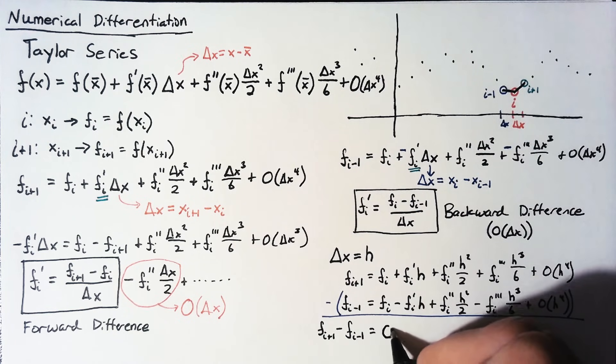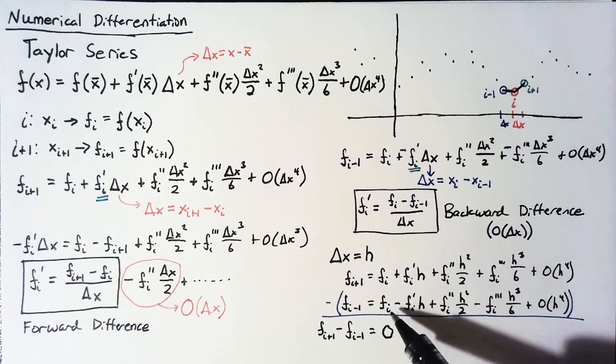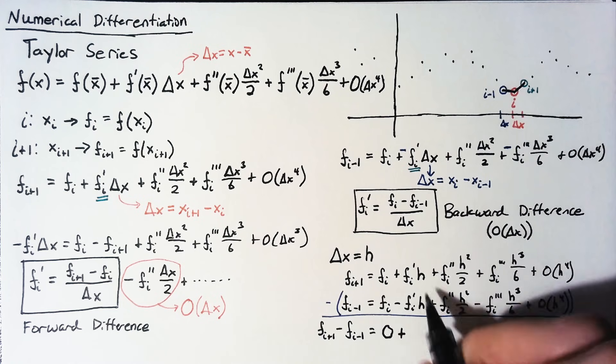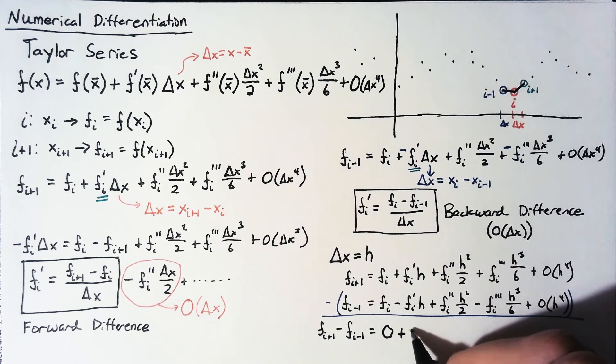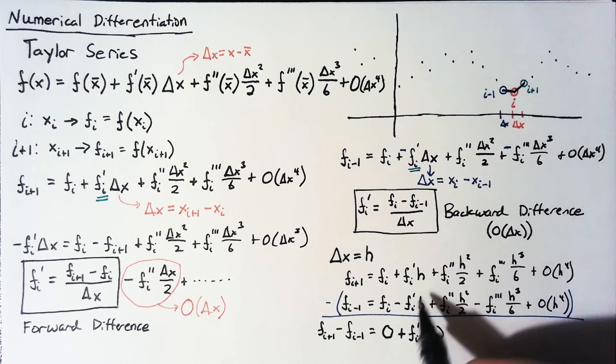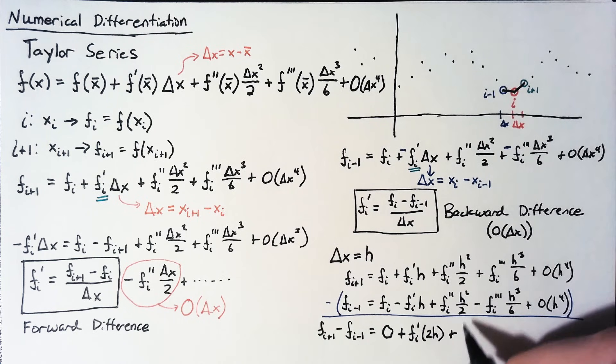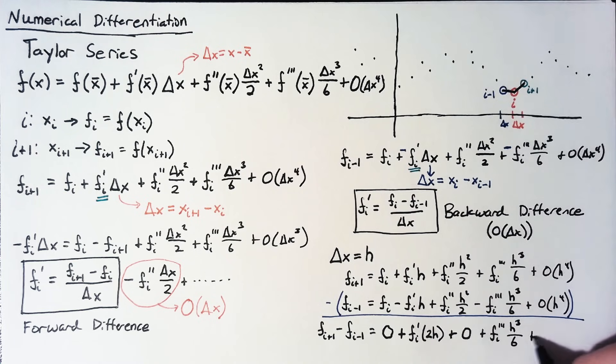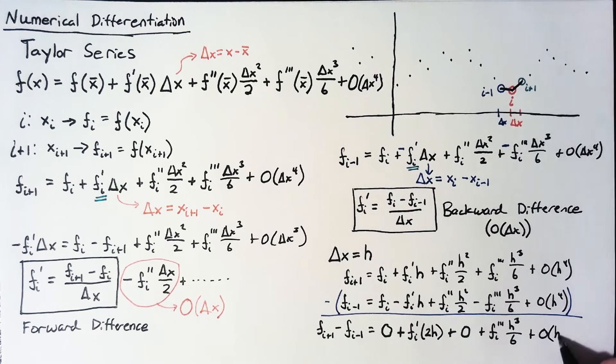And I'll end up with the following. This first term is going to cancel out. Remember that we're subtracting the second equation, so these terms cancel. Then for the second term, the fi prime, we end up with fi prime multiplied by not just h, but 2h, since we have two of those. The fi double prime term cancels out. And then we still have our fi triple prime term. And then the ever-pervasive higher order terms.